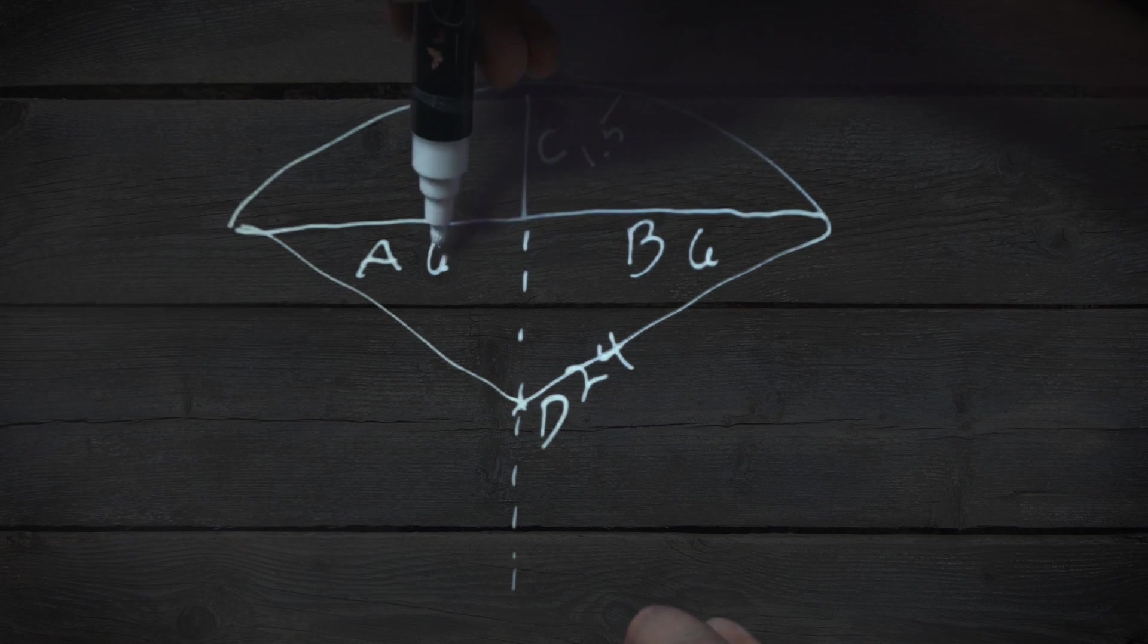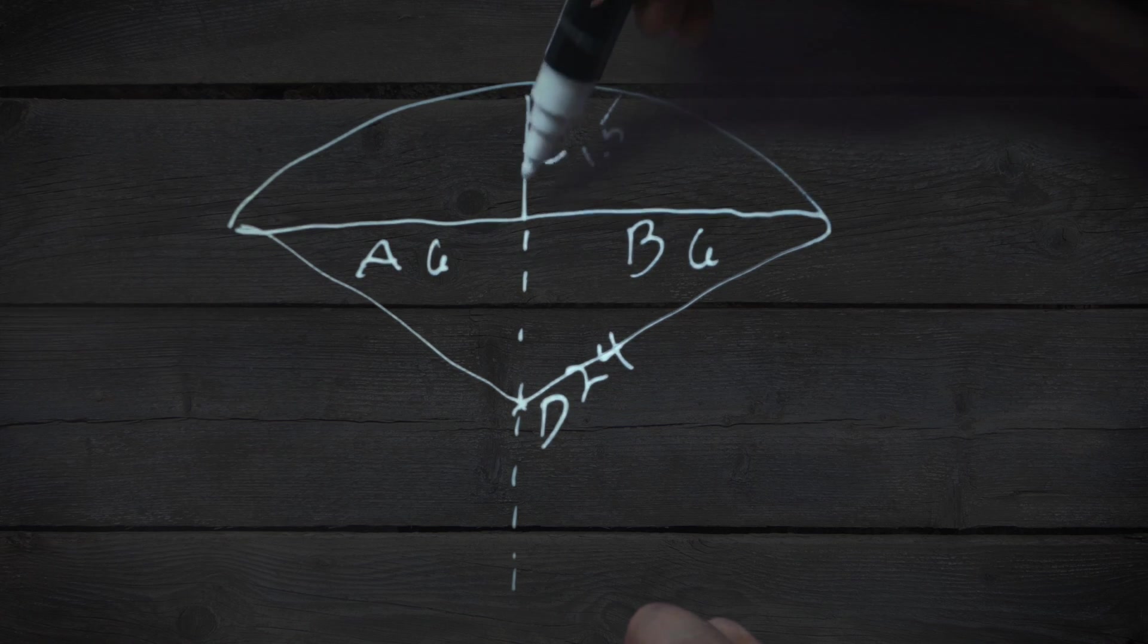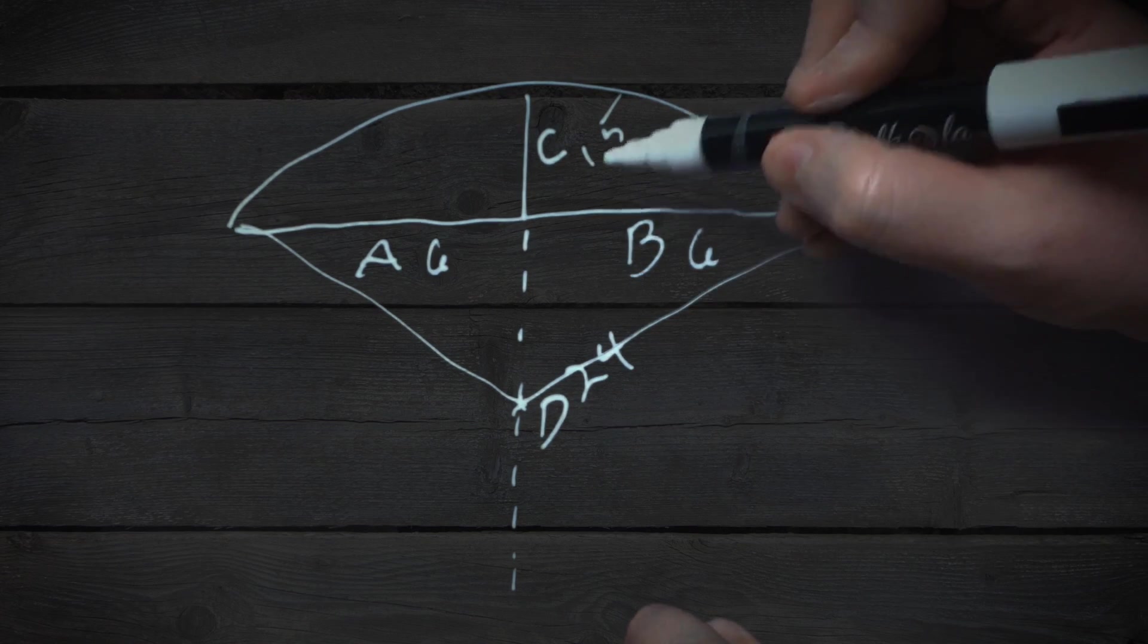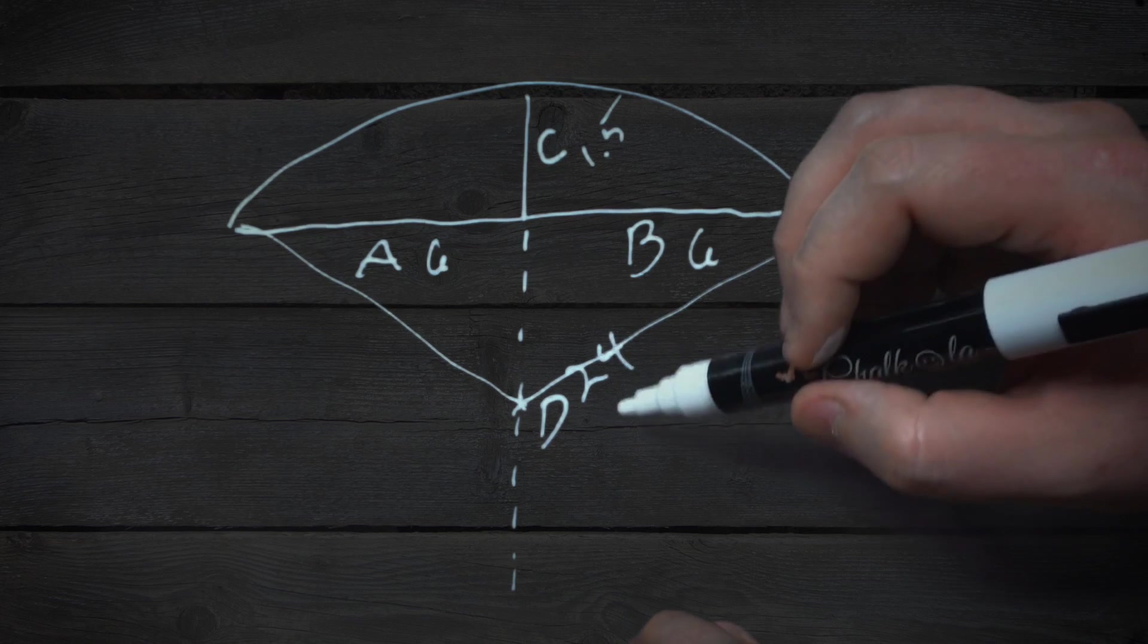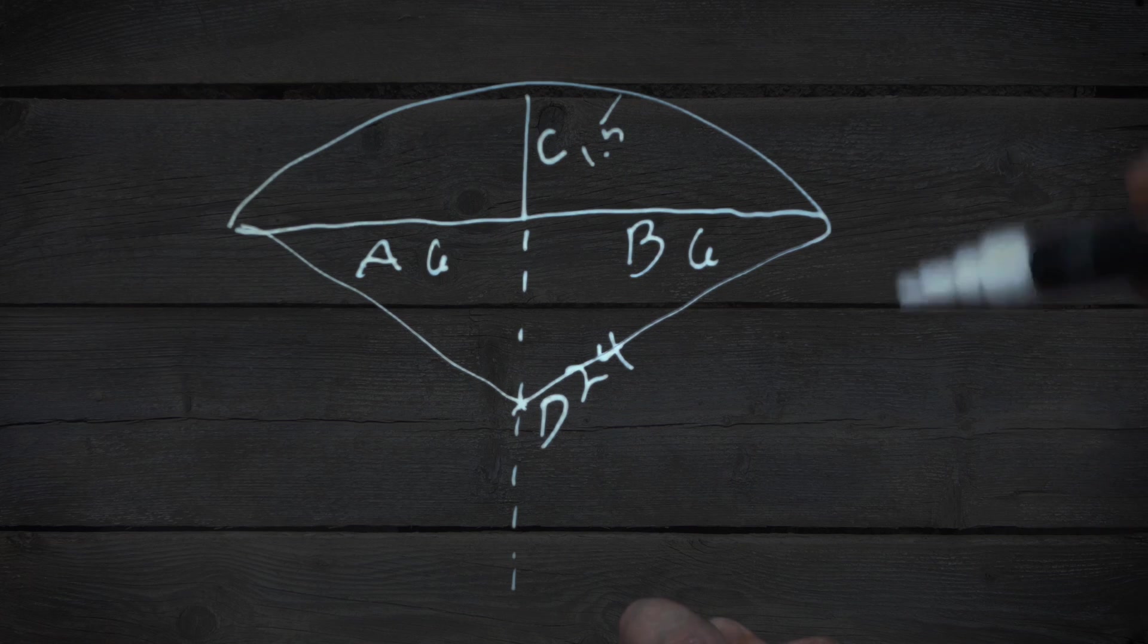We're going to just take A and B. It's the same thing: 6 times 6 is 36, divided by our height, which is C. In this case, 1.5 gives us 24. 24 plus 1.5, that's our diameter. 24 plus 1.5 divided by 2 will be our radius. It's really that easy.